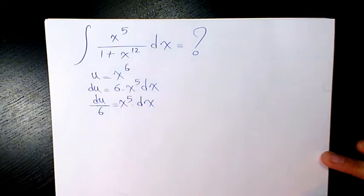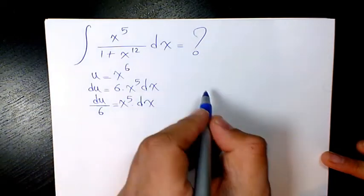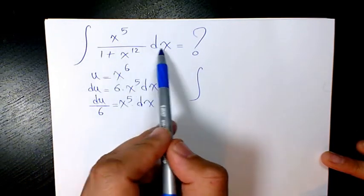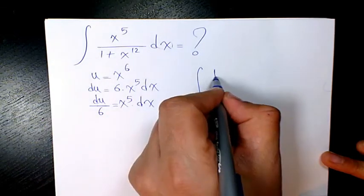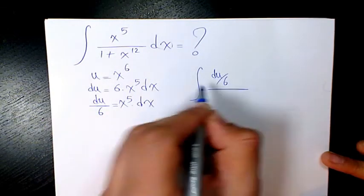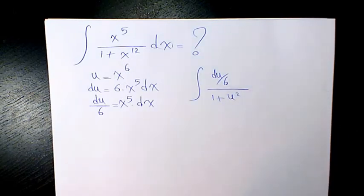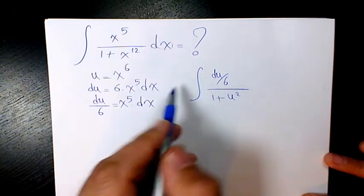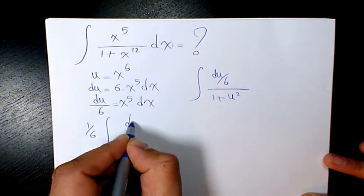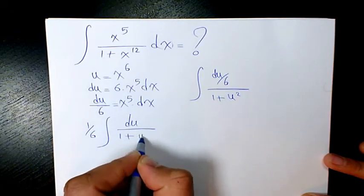Basically I divided both sides by 6. Then I'm going to have du divided by 6. And here I'm going to have 1 plus u squared. Then I take 1 over 6 out. It will be du divided by 1 plus u squared.